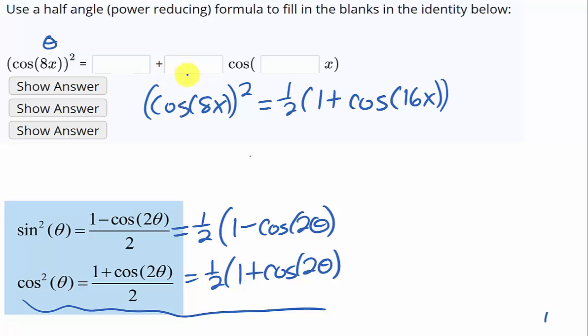And then when we see what we want for our answer, we're going to distribute this half through. So this would be 1 half and then this would be 1 half cosine of 16x.